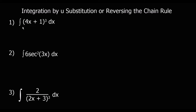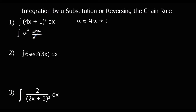Here I've got the integral of (4x plus 1) cubed with respect to x. So we're going to say the bracket is u, so u equals 4x plus 1. That gives us the integral of u cubed with respect to x, which we'll change to dx/du times du.